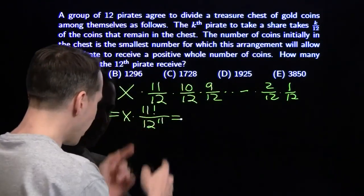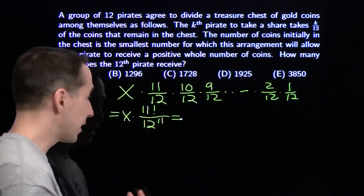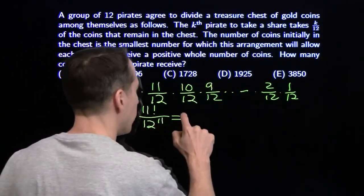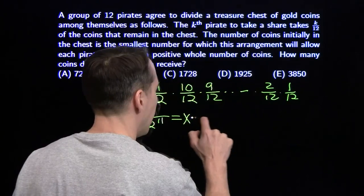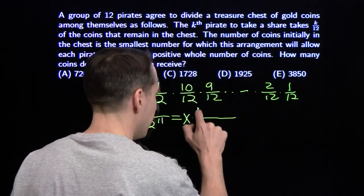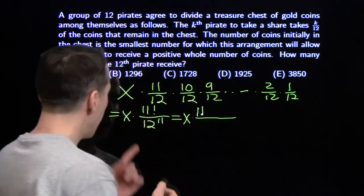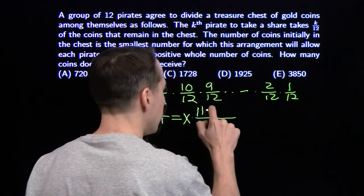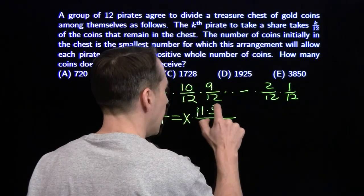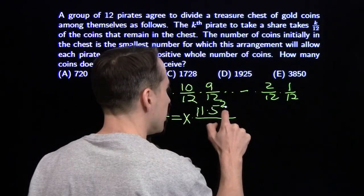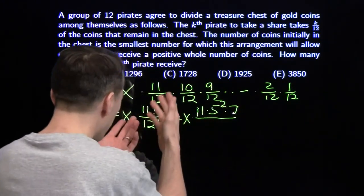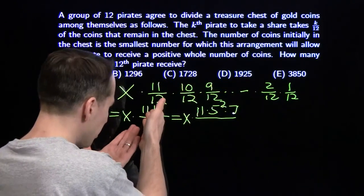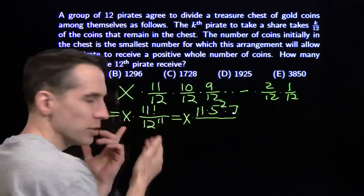We can take out all the factors of 2 and 3 from 11 factorial and see what's left. We'll be left with a factor of 11, two 5s from the 5 and the 10, and a 7. Then we simplify the fraction by taking out factors of 2.